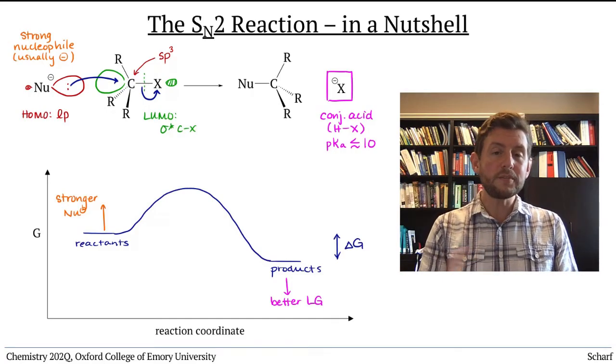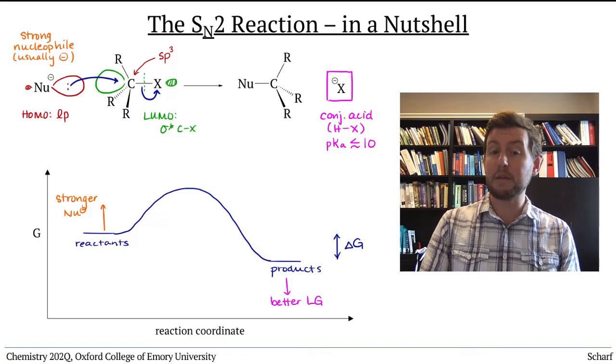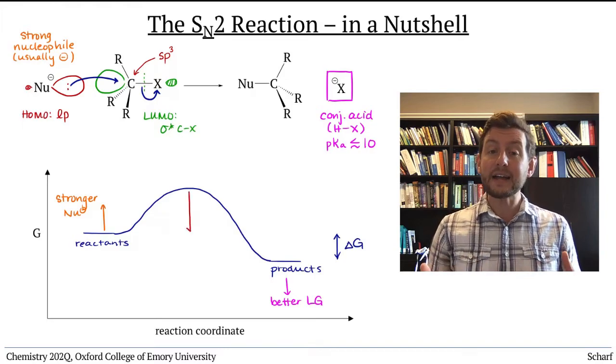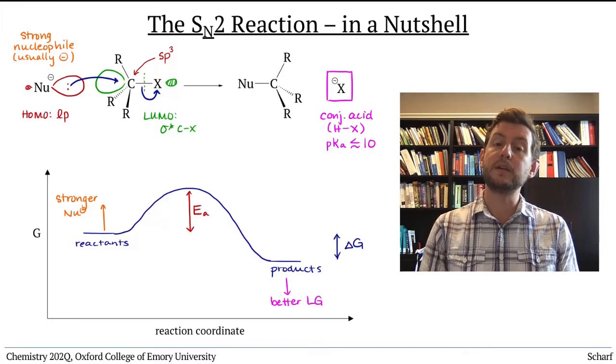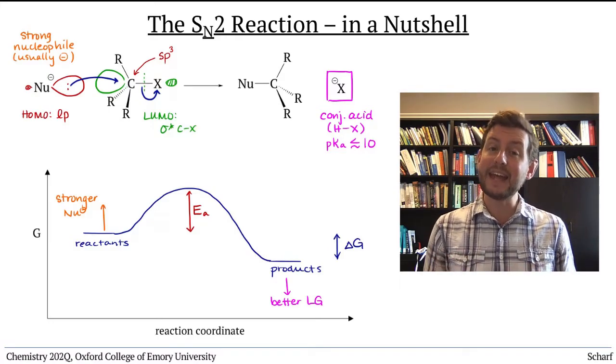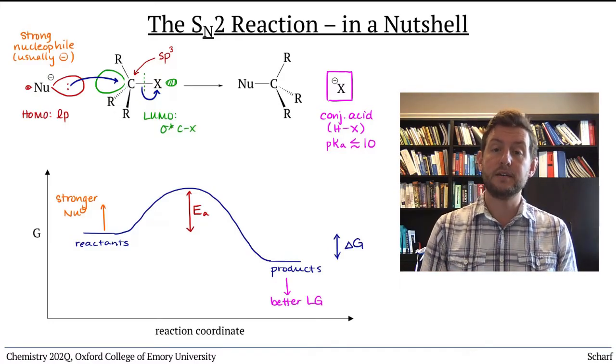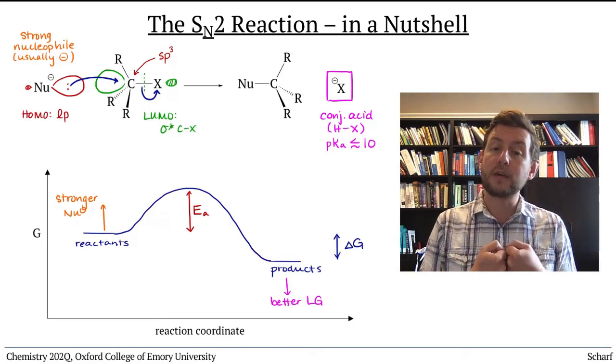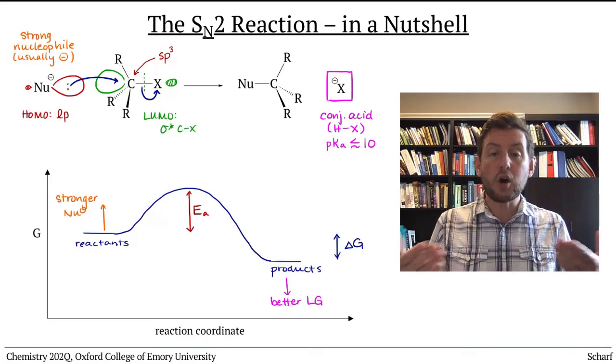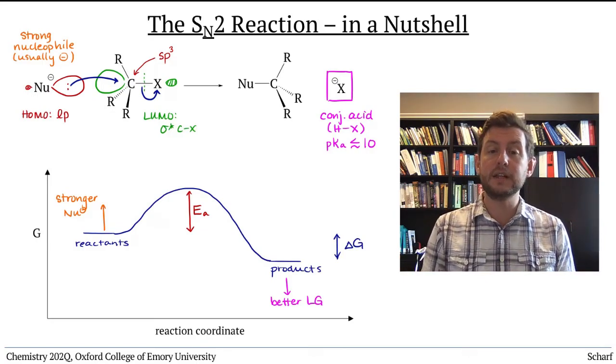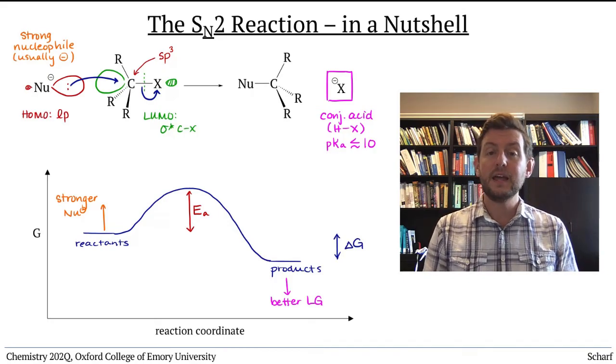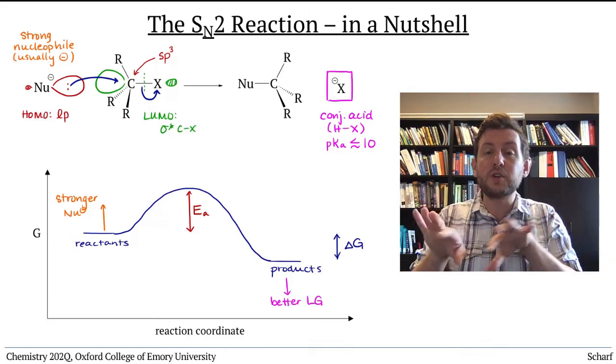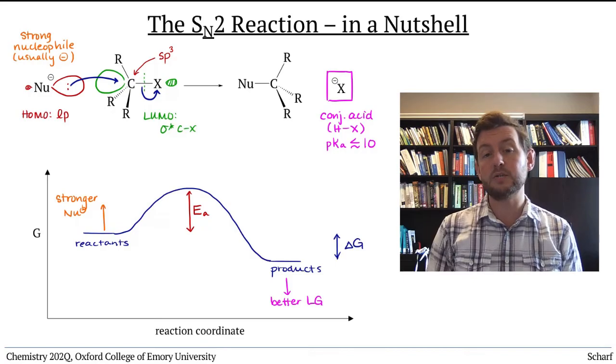But one more factor is even more important than these two thermodynamic ones. In order for an SN2 reaction to occur, the activation energy barrier must be relatively low. This is a kinetics consideration. It must be pretty easy for the reactants to collide with each other in the proper orientation, so that the HOMO of the nucleophile and the LUMO of the electrophile can effectively overlap.